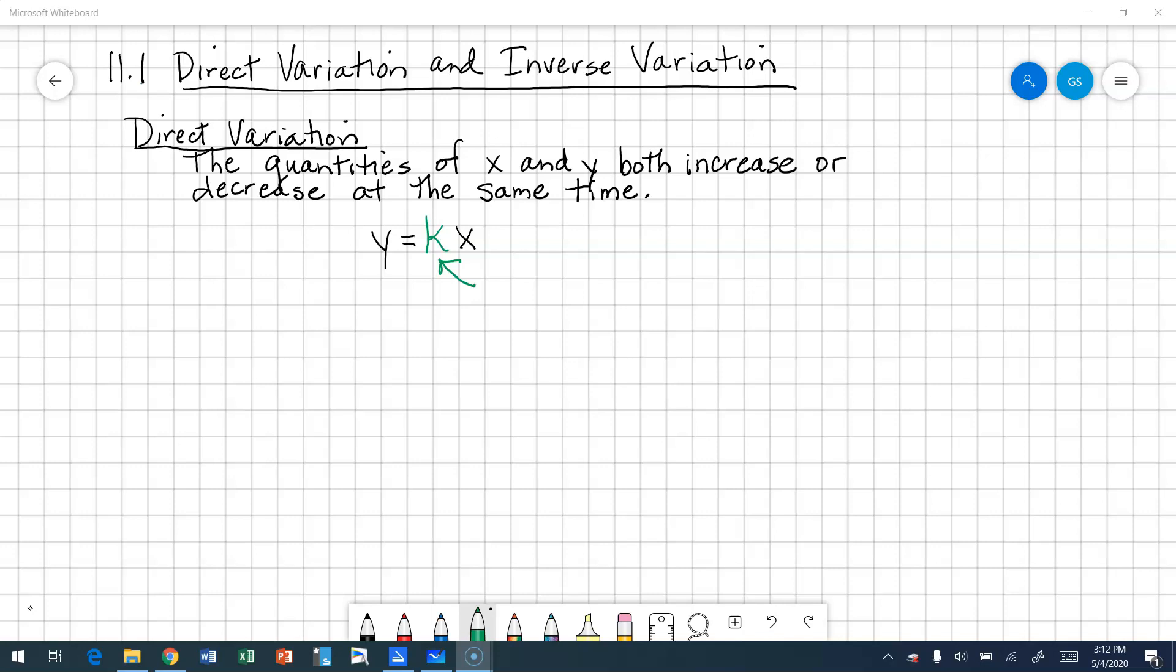So direct variation, both my x and my y increase or decrease at the same time. So what would be a good example to explain direct variation?